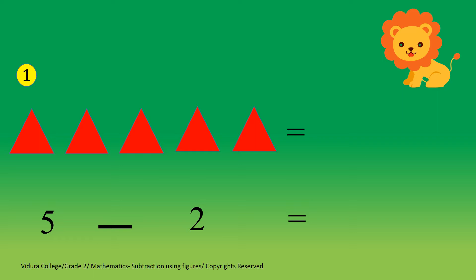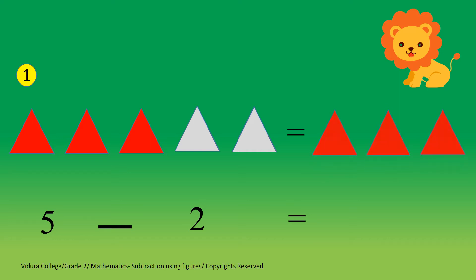Look at the first question. There are 5 triangles and we have to take out 2 triangles. Let's start to take out 2 triangles first. Now what is the answer? Yes, the answer is 3 triangles. Therefore, 5 minus 2 equals 3.